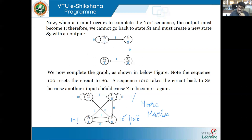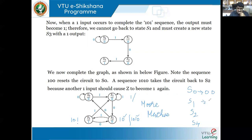Instead of three states as in the Mealy machine, I now have four states: S0, S1, S2, S3. One major difference between Mealy and Moore is that Moore requires more states. To represent four states, I need a minimum of two bits. I encode S0 as 00, S1 as 01, S2 as 11, and S3 as 10.